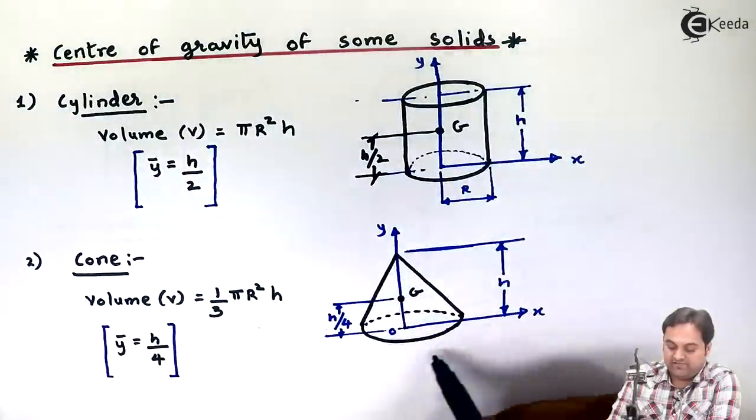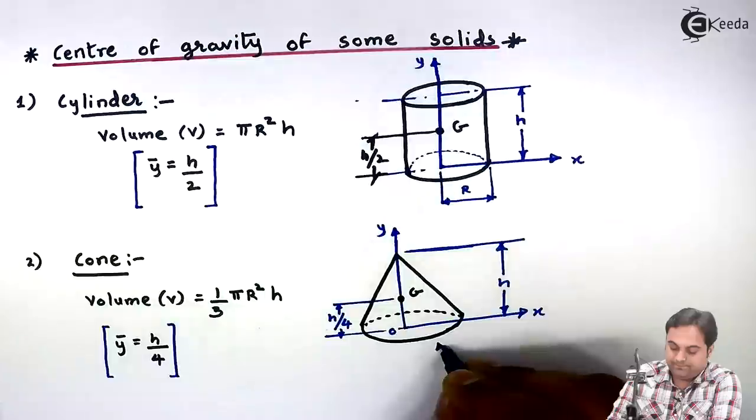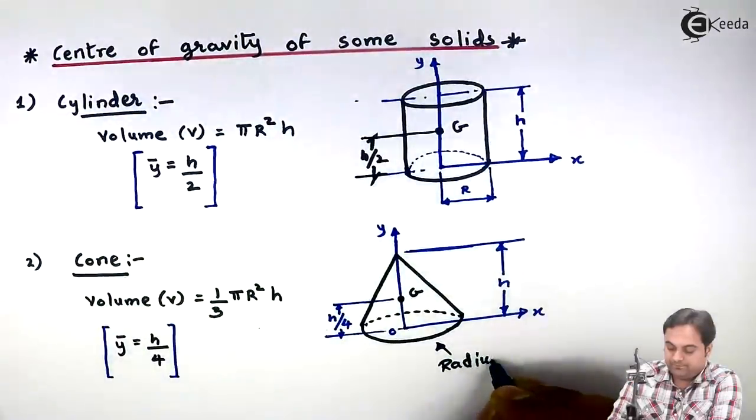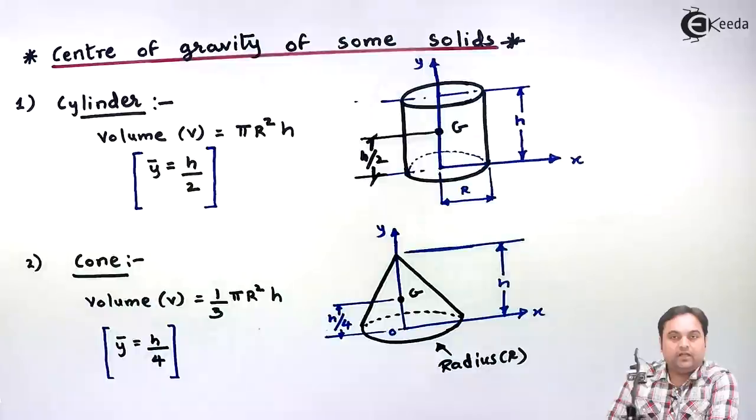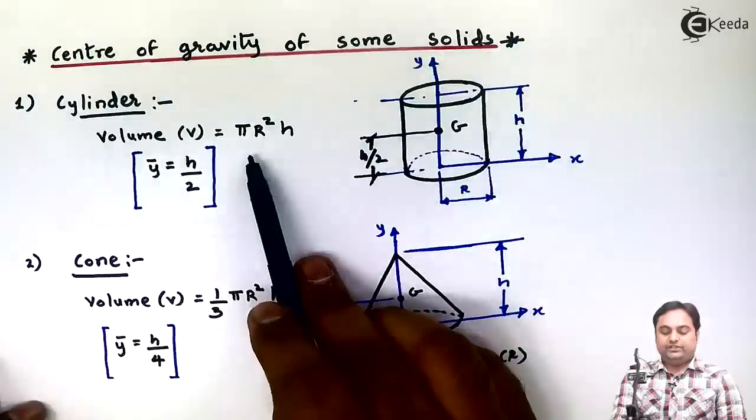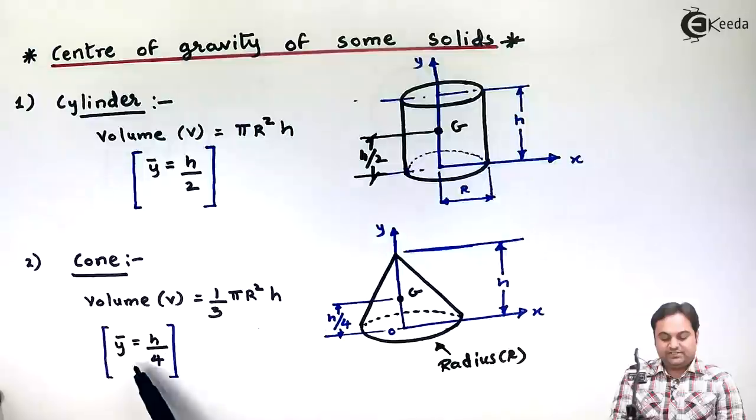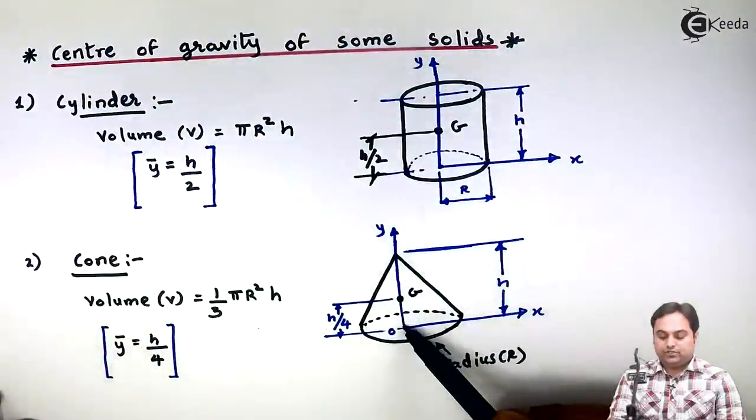Here I have a cone whose radius will be capital R, that would be the radius of the cone. Volume is 1/3 πR²H, like for cylinder it was just πR²H. For cone the volume is 1/3 πR²H. ȳ is the location of CG, that is center of gravity, it is H/4 distance from the base.